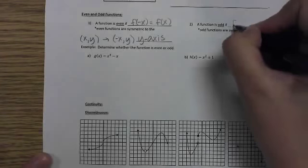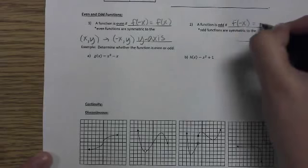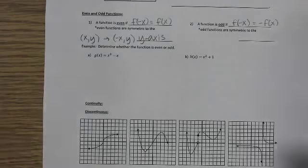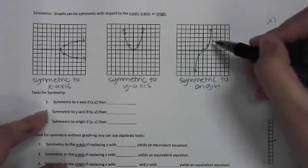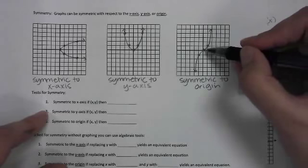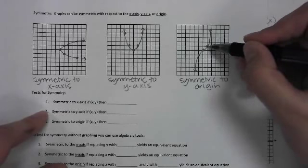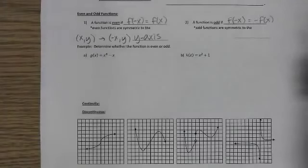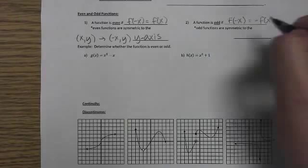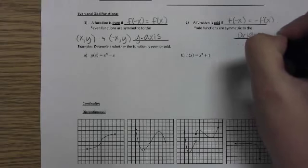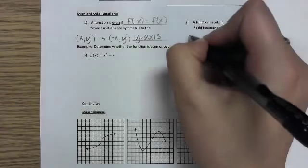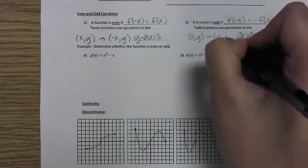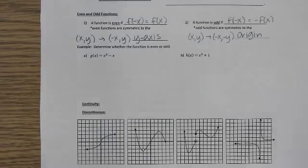A function is odd if when you plug in a negative x value, it changes the sign of the y value. For an odd function like y equals x to the third — the cubic we graphed — if I plug in positive one I get positive one, but if I plug in negative one I get negative one. So plugging in the negative changes the sign of the y value. Odd functions are symmetric with respect to the origin. The original point is x, y, and plugging in negative x gives negative y.